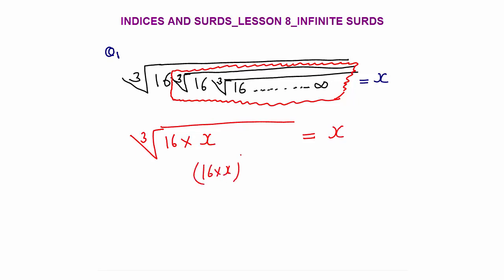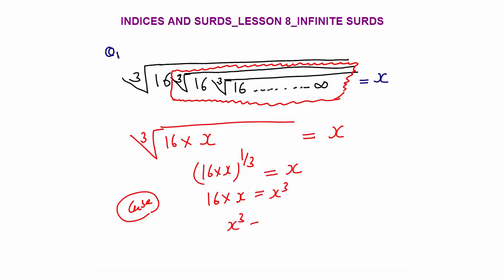So this will be equal to cube root of (16 × x), which equals x. Cube root means power 1/3, so this is (16 · x)^(1/3) = x. Now cubing both sides: what do we get? This will be 16 · x = x³.